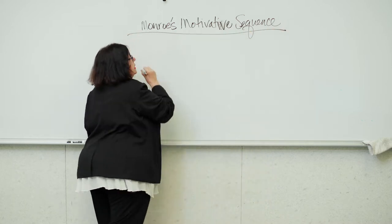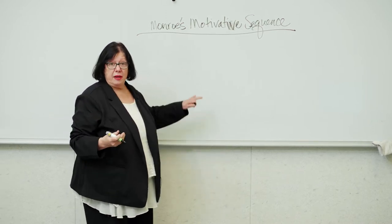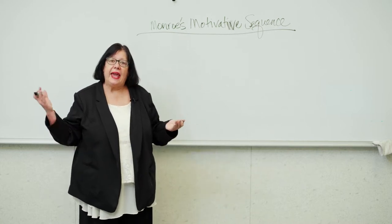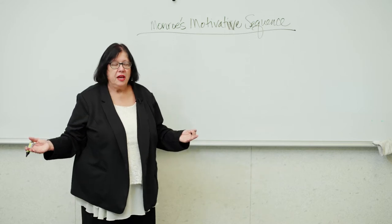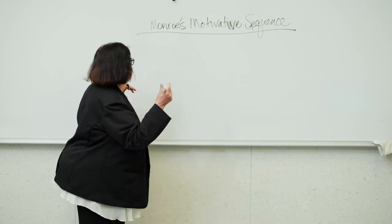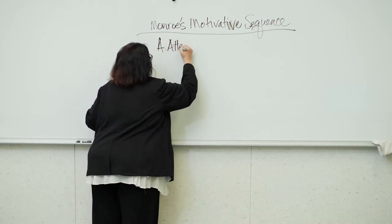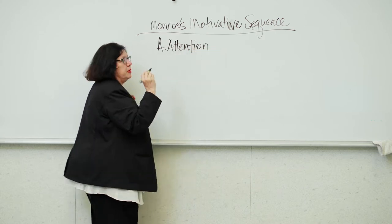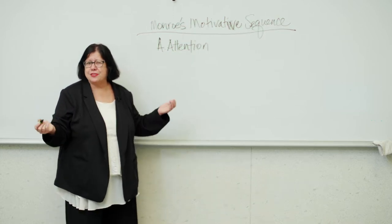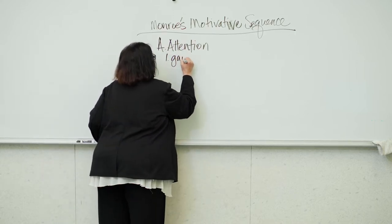So first of all I'm going to tell you a little bit about Monroe's Motivative Sequence. So Monroe is a psychologist and he studied how people are persuaded. And a lot of his work has gone into a lot of the commercials that you've watched in print and on TV for years. So he's a really good source to go to for persuasive speaking. So he starts off his structure with A which stands for attention. Monroe knows that the best way to start your speech is to gain attention.